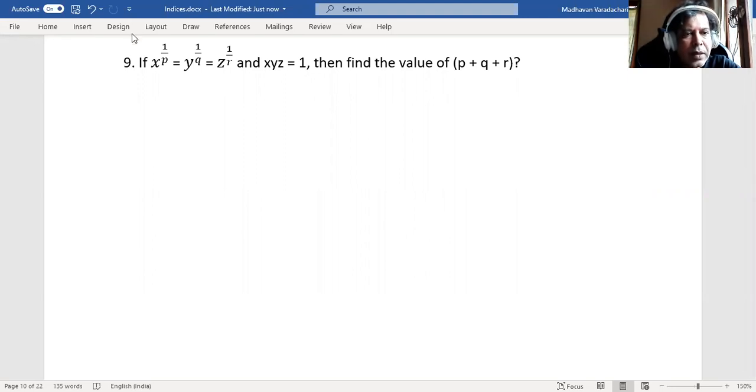So here, three terms are equal. So what I will do, I will equate it to something common. Since all these are equal, I will equate it to some constant k. I'm assuming it as k.